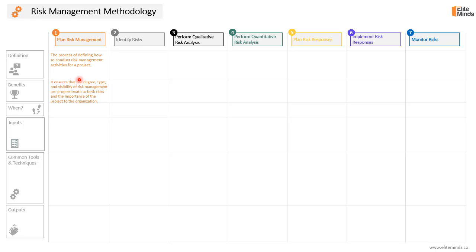What are the benefits of this process? It ensures that the degree, type, and visibility of risk management are proportionate to both the risks and the importance or priority of the project to the organization. We don't want to do extra planning for project risks. The efforts spent on risk management should be proportionate to the degree of risk and the criticality of the project for the organization.